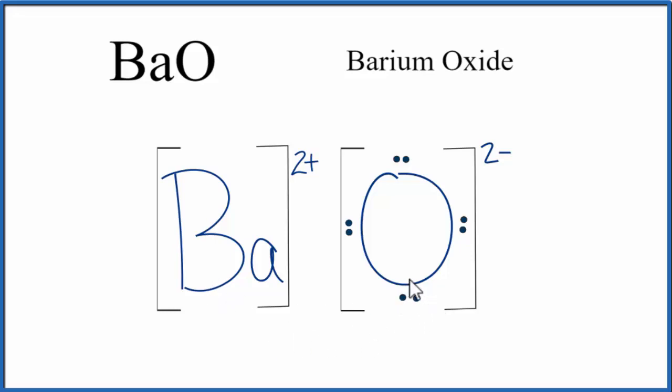The barium lost them, and the oxygen gained them, and they're not being shared like in a covalent bond. This is Dr. B with the Lewis structure for BaO, barium oxide. Thanks for watching.